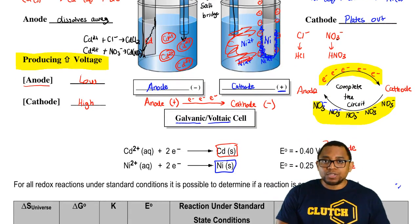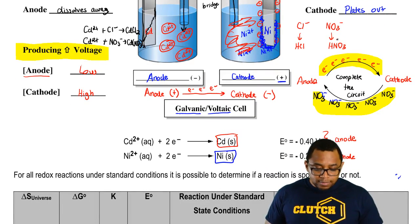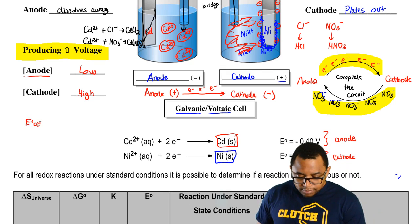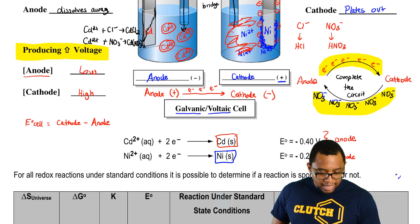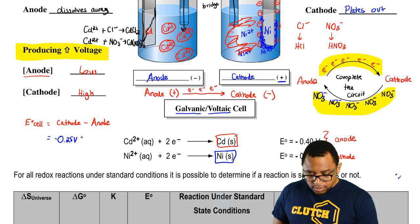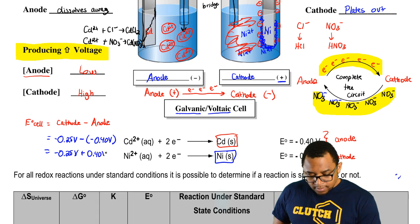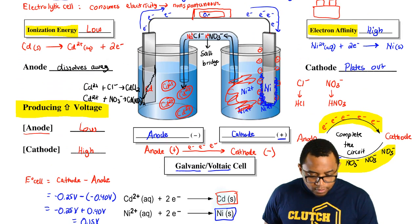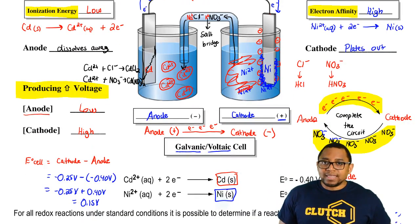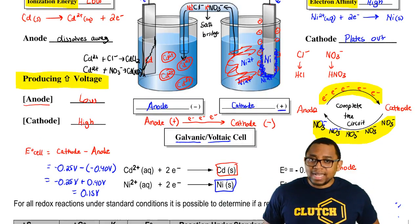How do we find the amount of voltage produced in a galvanic or voltaic cell? Cell potential E_cell equals cathode minus anode. The cathode is −0.25 V minus −0.40 V. A minus of a minus is a positive, so that gives us 0.15 volts.